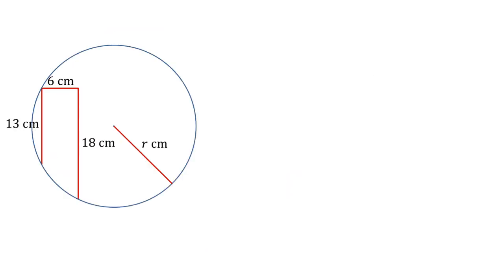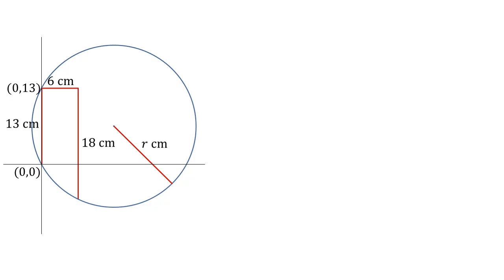We're going to solve this problem using coordinates and the equation of a circle. We're going to set it up such that our circle lies on some axes and the bottom of that 13 centimetre chord is at the origin. From there, as we've got a 13 centimetre chord going straight up, where it touches the circle at its top must have coordinates of (0, 13), since it's still on the y-axis but has gone up 13 centimetres.